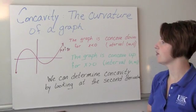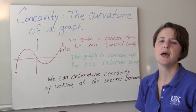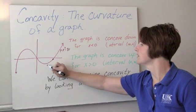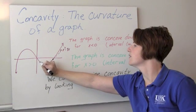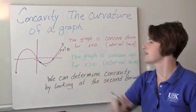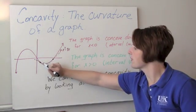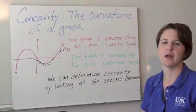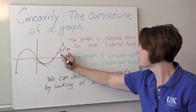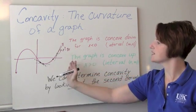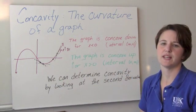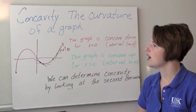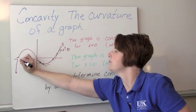Looking at the graph of y equals x cubed minus 9x, if you look at the places that are concave up and draw a tangent line, the tangent lines fall below the graph. If you think about the different slopes, the slopes are getting bigger as we move from left to right. Positive slopes are getting more steep and negative slopes are getting less steep. So for a concave up part, the tangent lines are below the graph. For concave down, the tangent lines are above the graph.